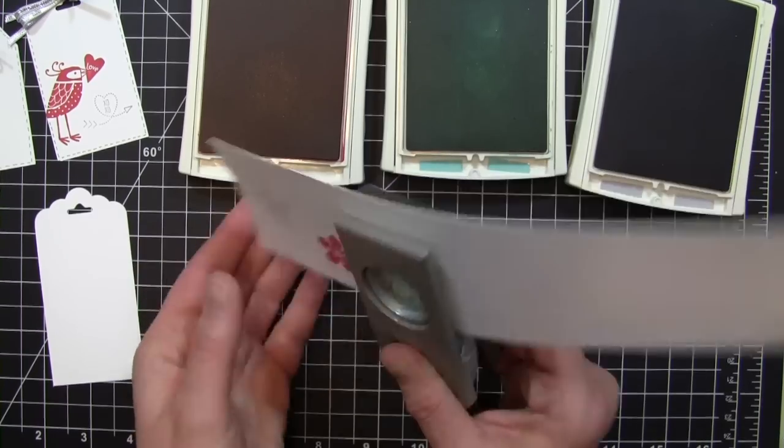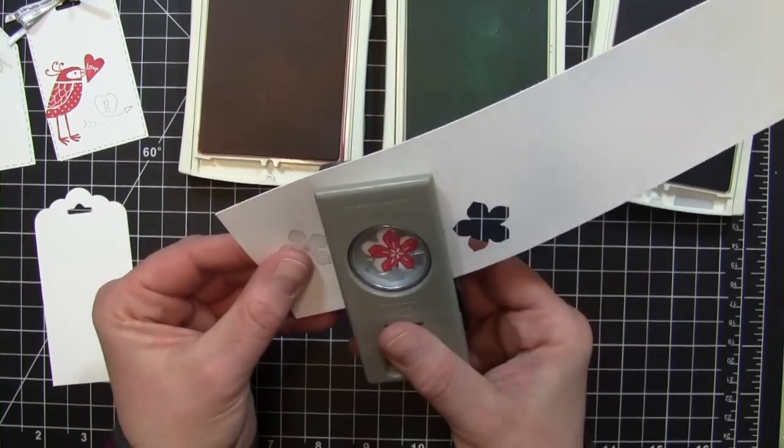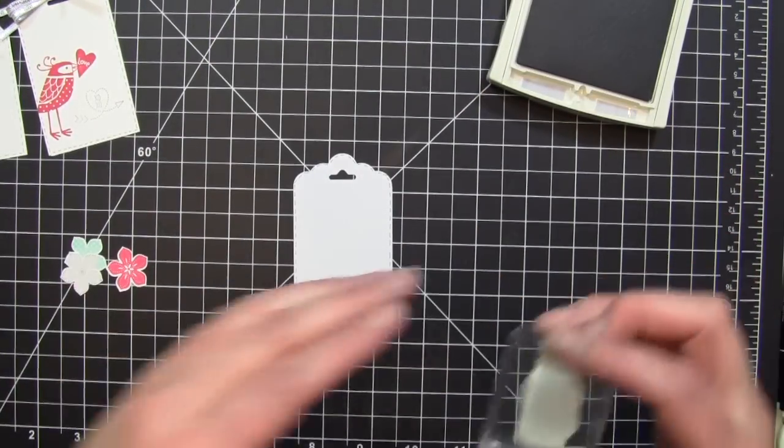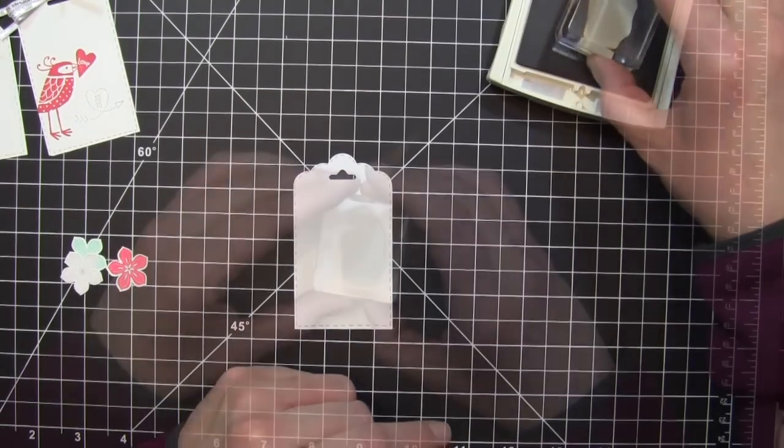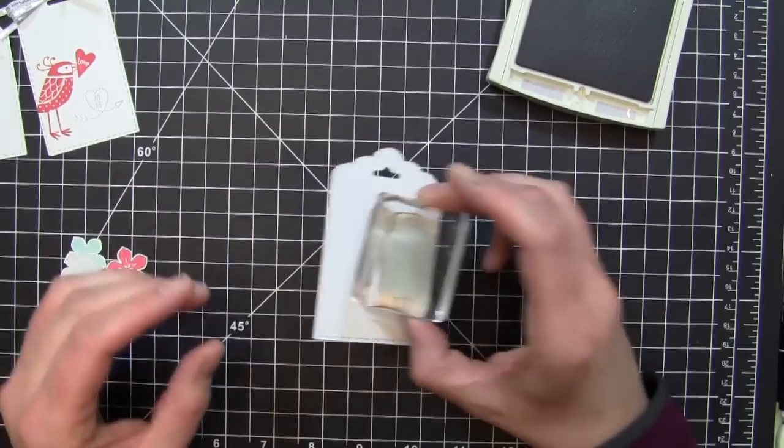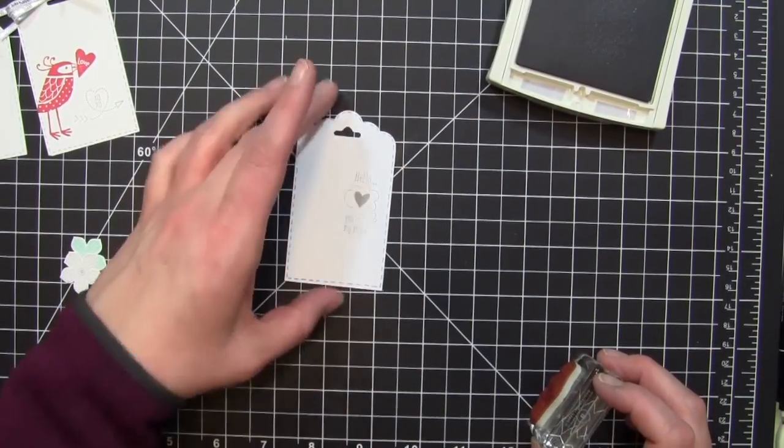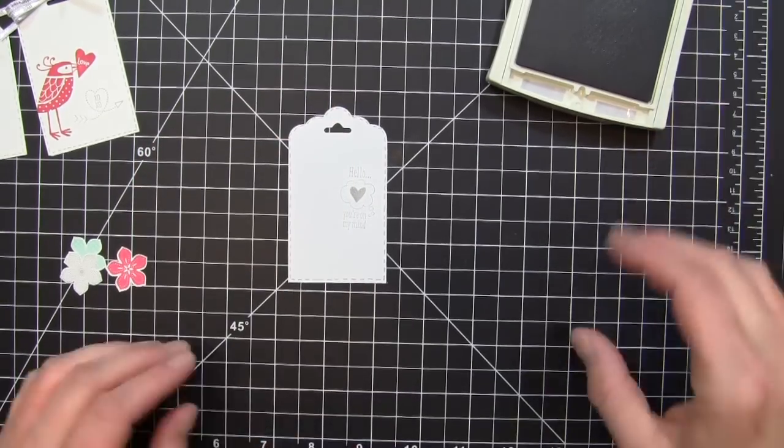I also went ahead and did the stitching around my tag for this as well. The Love You to the Moon stamp set is what I'm going to be using for my sentiment. That sentiment says, Hello, you're on my mind. And I stamped that out in Smoky Slate.